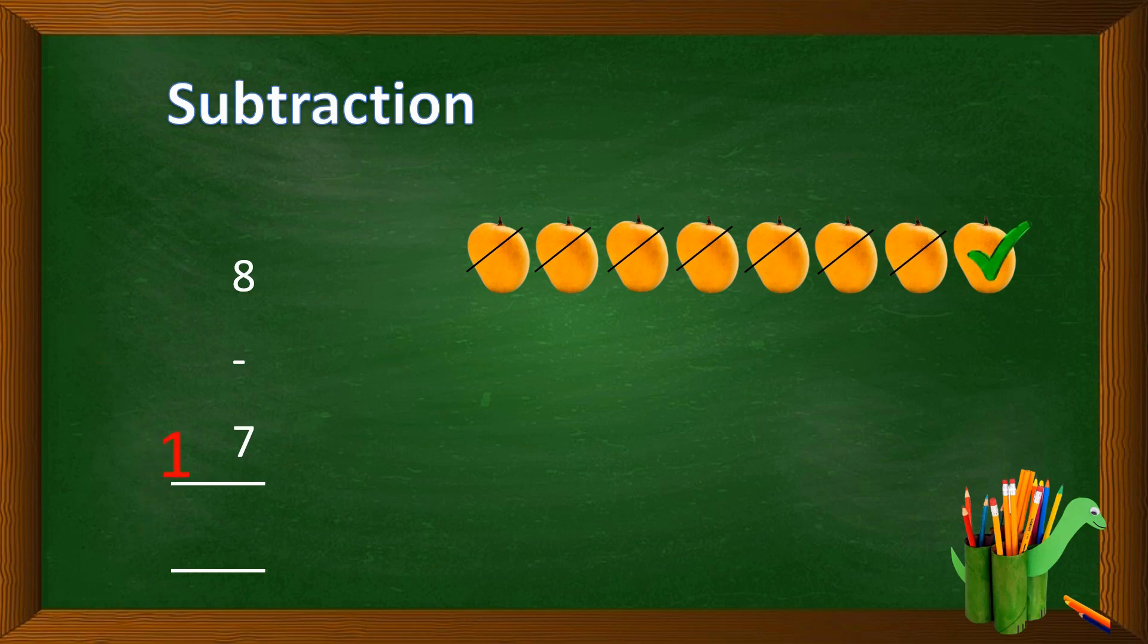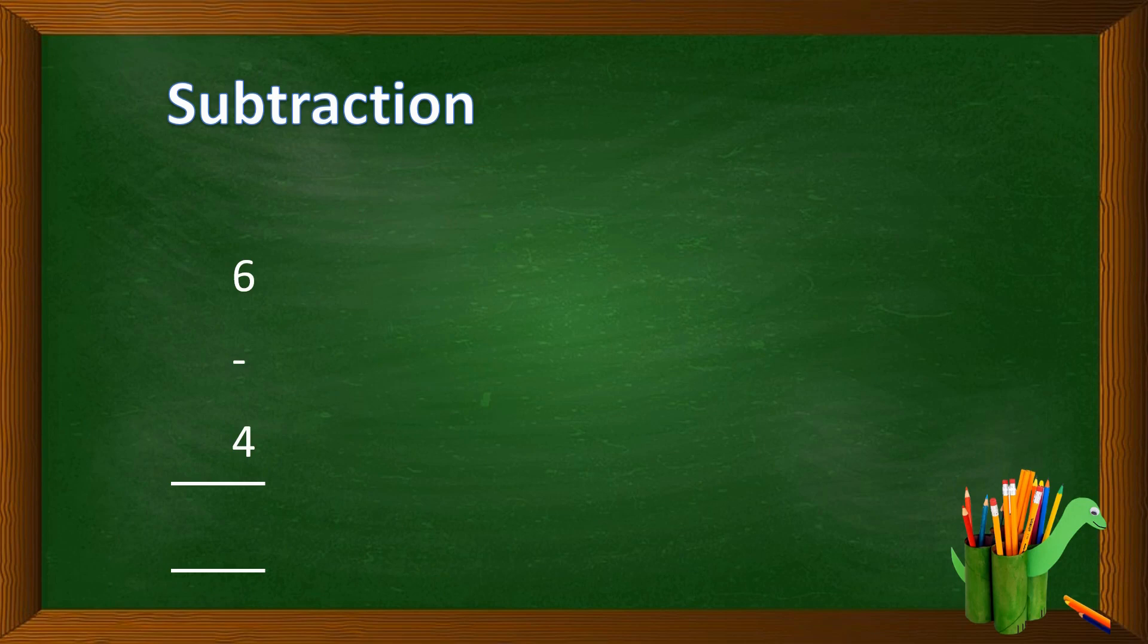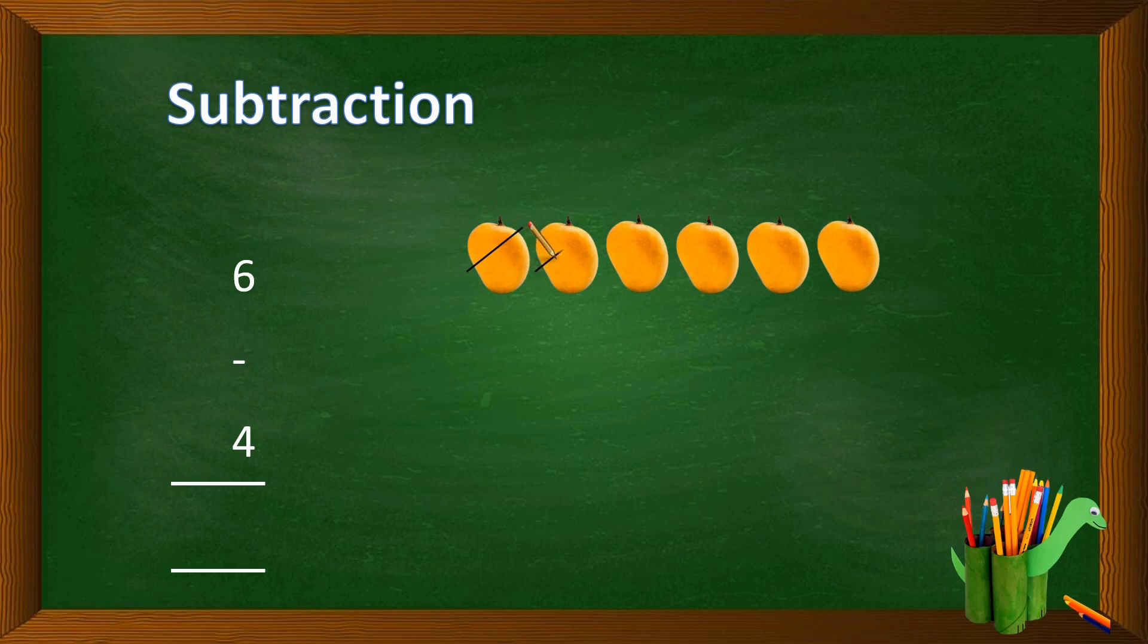Now subtract 6 minus 4. Kids, you have 6 mangoes: 1, 2, 3, 4, 5, 6. Now 4 mangoes are eaten by you: 1, 2, 3, 4. How many left? 1, 2. So the subtraction of 6 minus 4 is 2.